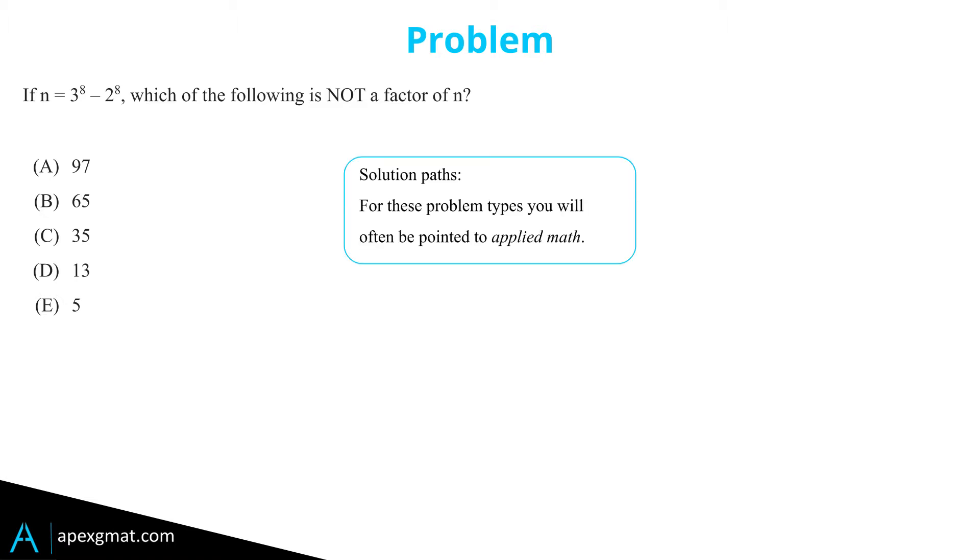Notice there's an applied math solution path. We want prime factors of 3 to the eighth minus 2 to the eighth, and it's just reasonable enough that we can do the math here.